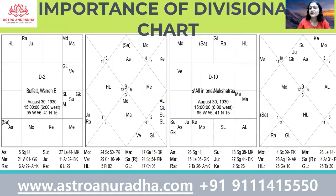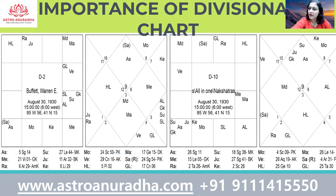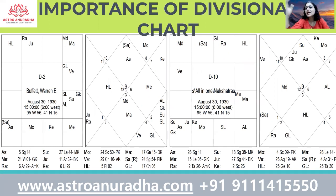In the D2 chart, we see again Mercury is exalted, aspected by the second lord Saturn, and it is also aspected by Mars. That means he would be able to make a lot of money with a strong power of discrimination, but he would also be under a lot of stress about how to make the money. And yes, the corporate world is quite stressful.